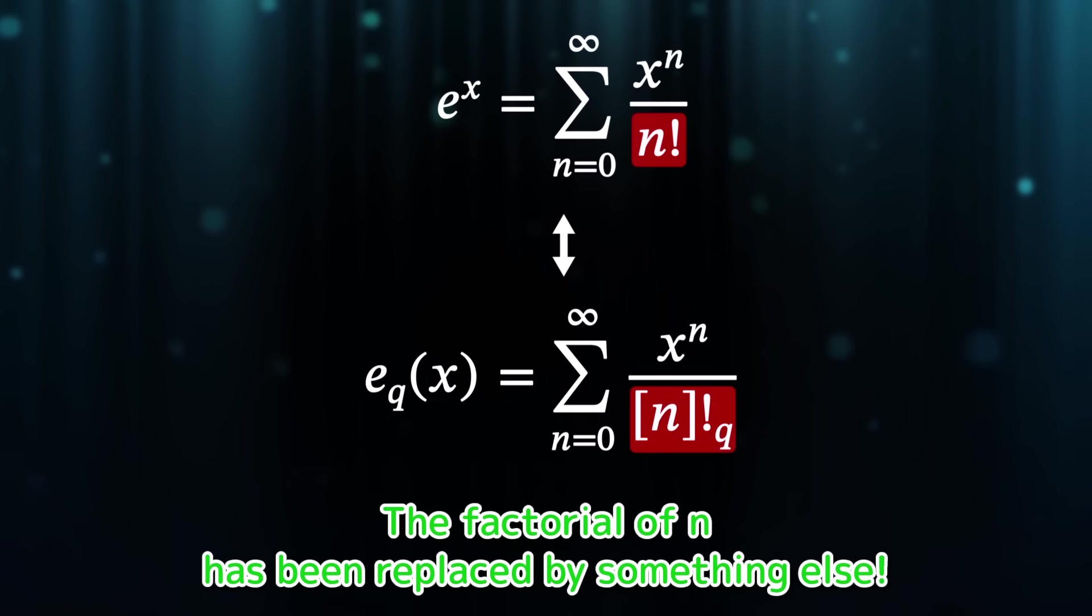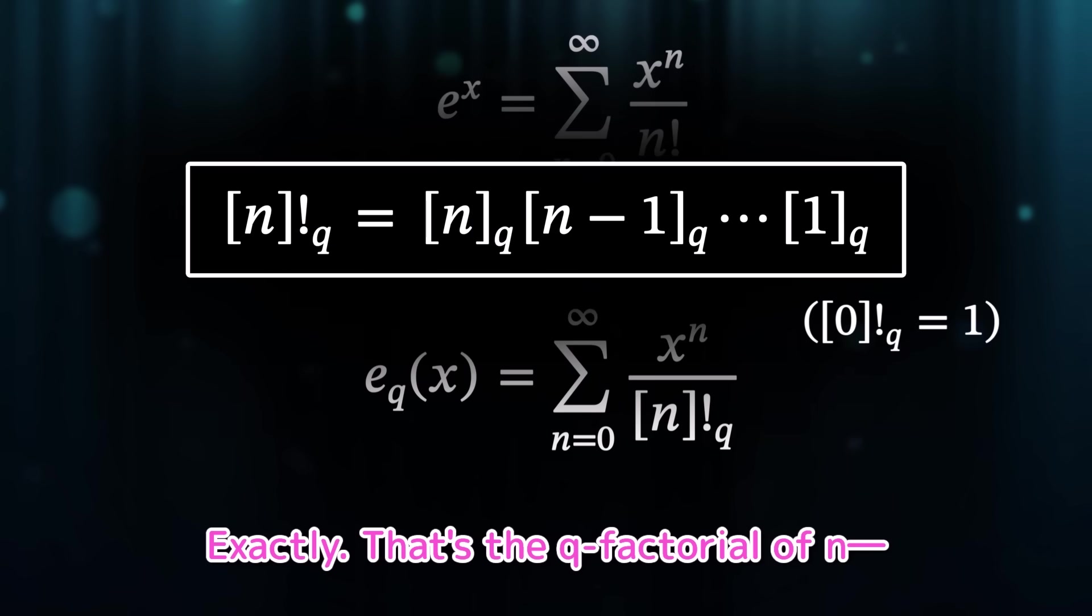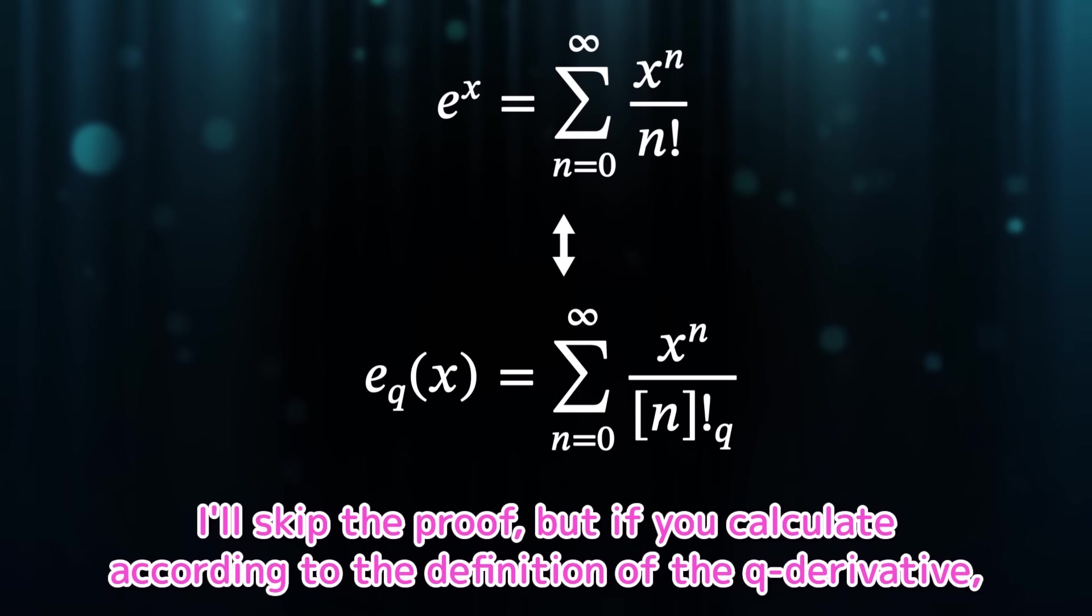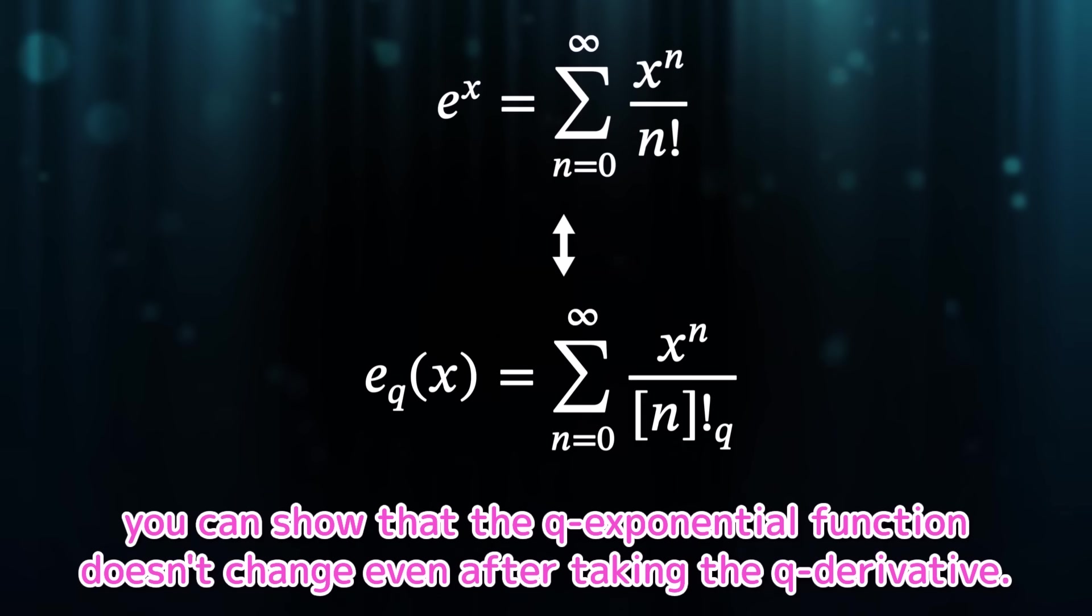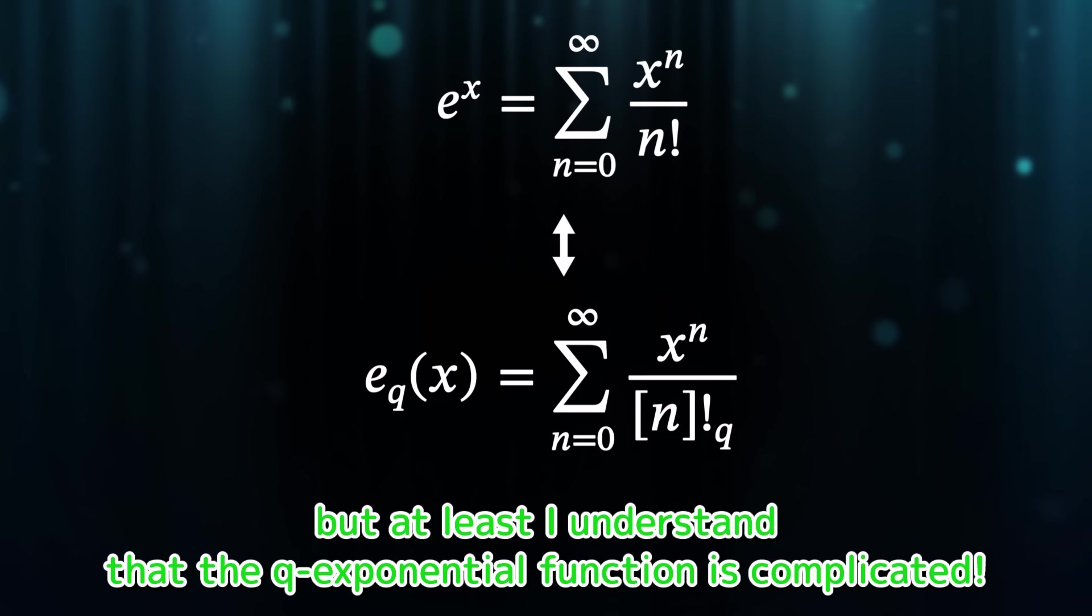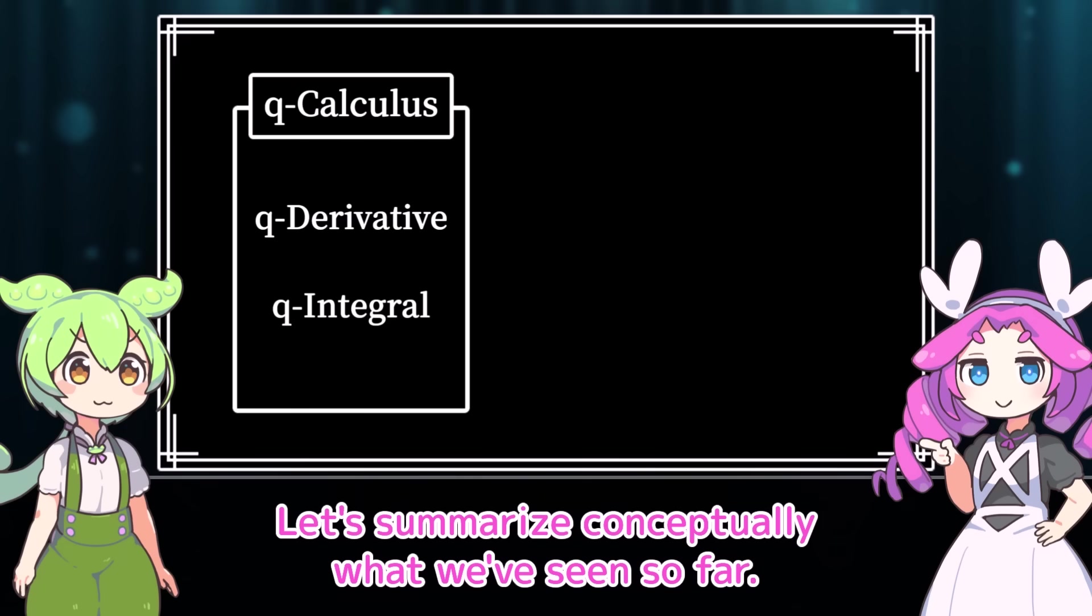Oh yeah! The factorial of n has been replaced by something else. Exactly. That's the q factorial of n. The product of key integers multiplied together like a factorial. I'll skip the proof, but if you calculate according to the definition of the q derivative, you can show that the q exponential function doesn't change even after taking the q derivative. There's a lot of new information here. It's a bit confusing, but at least I understand that the q exponential function is complicated.